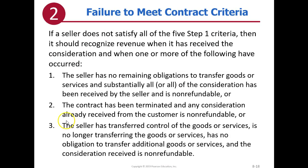Now, what if you don't meet the five criteria — at least one is missing? We have specific ways of dealing with it. The big overview is that you have to call it unearned revenue until certain things have happened: there are no remaining obligations, no more consideration being exchanged between the parties, and the transfer of control has happened. Let's see what this means in an example.